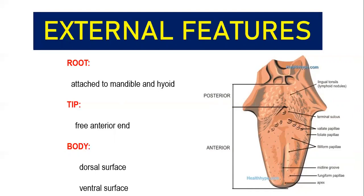First thing is the root. The root of the tongue is attached to two bony structures — your mandible and your hyoid bone — by means of muscular attachments. Since the root of the tongue has very strong muscular attachments, it is not being swallowed during deglutition. It is strongly fixed in the oral cavity because the root of the tongue is attached to bony prominences by means of strong muscular attachments.